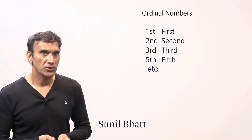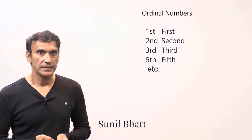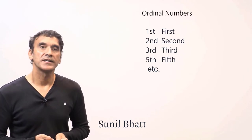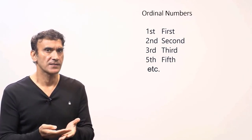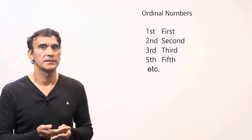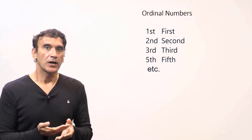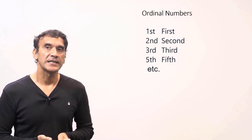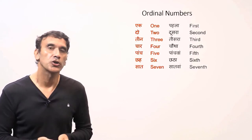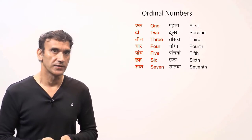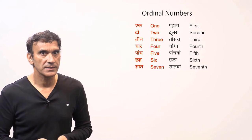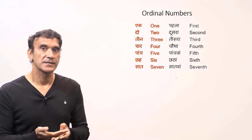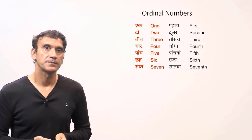The next grammar point is ordinal numbers. Ordinal numbers are used to describe the order of numbers, such as first, second, third, etc. The ordinal numbers in Hindi are variable adjectives, meaning they change according to number and gender. Here is the list of the first seven ordinal numbers, and after number seven there is a set pattern.